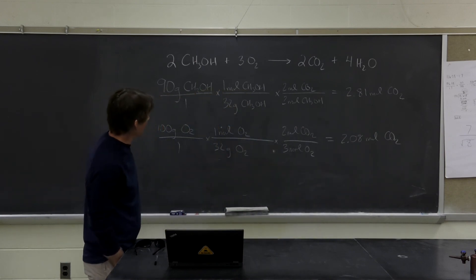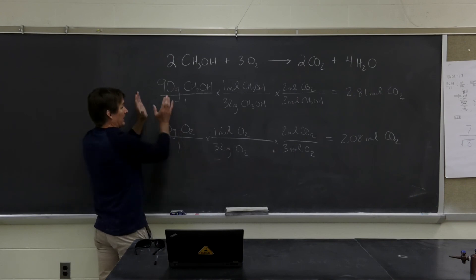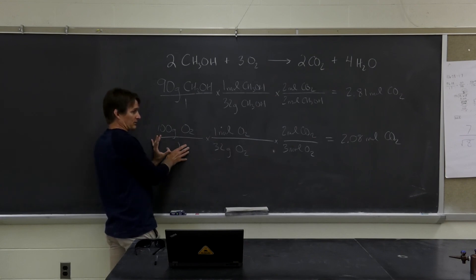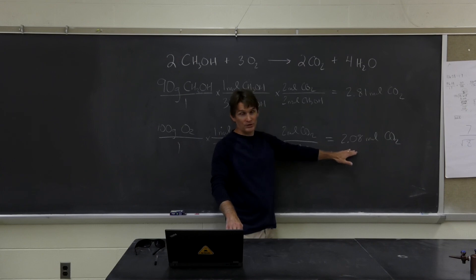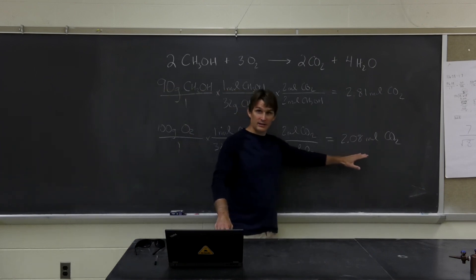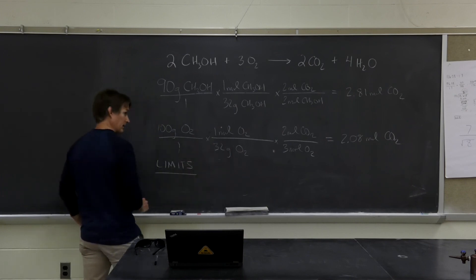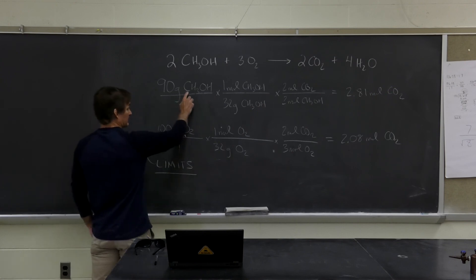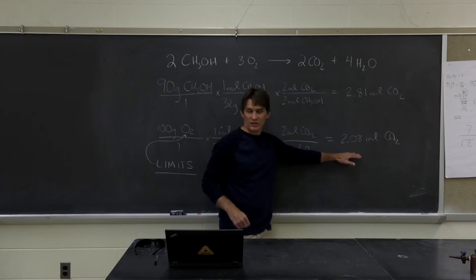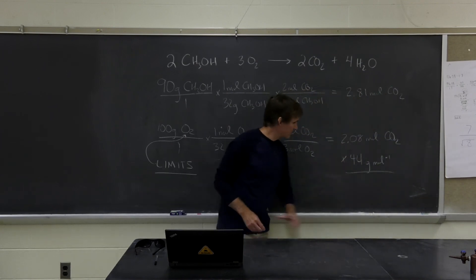I'm going to look at this. I've mixed 90 grams of methanol and 100 grams of oxygen. If all 90 grams of this react, I should be able to get 2.8 moles of carbon dioxide. If all 100 grams of oxygen react, I should only be able to get 2.1 moles of carbon dioxide. Notice, it is the oxygen that is limiting how much carbon dioxide can be produced. Therefore, the limiting reagent, in this case, which limits how much carbon dioxide can be produced, is going to be the oxygen. The reagent in excess is the methanol. The amount of carbon dioxide that's going to be produced is 2.08 moles, which I can convert that to grams by multiplying this by 44 grams per mole, which is about 88 grams.